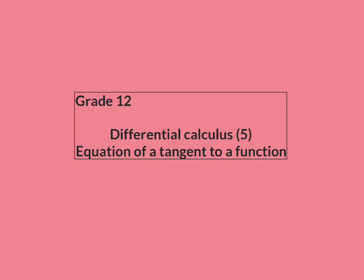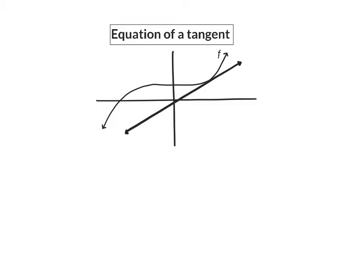In this lesson, we are going to see how to calculate the equation of a tangent to a function. In the four previous lessons, we had a look at how to determine the gradient of a tangent to a curve, and we did that by using first principles and our formula, and also by using the rules of differentiation. Now that we are able to calculate the gradient of the tangent, we are going to continue by calculating the equation of the tangent.